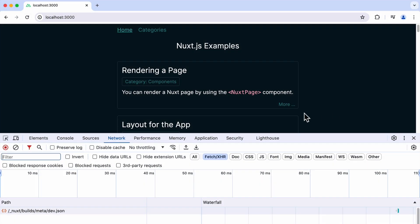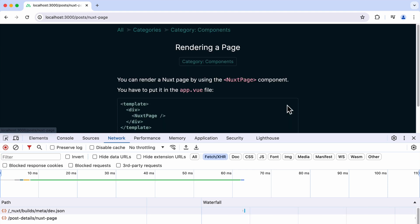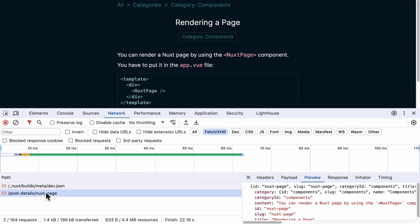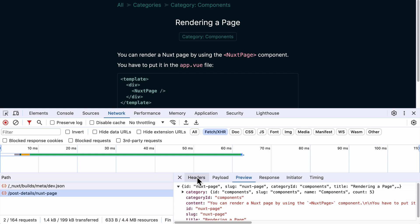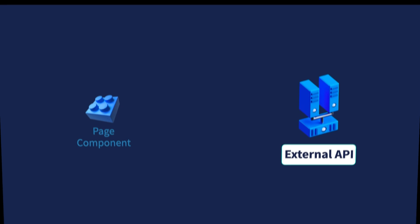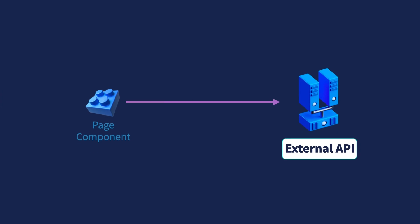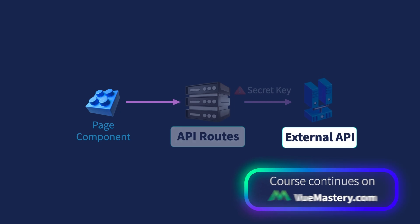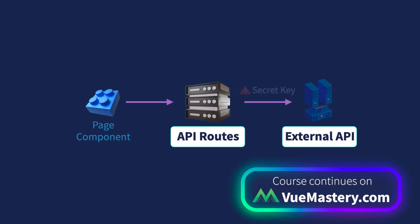When you fetch data from an API in a page component, the actual API URL will be exposed on the front end. Anyone would be able to see this using the browser dev tools. This means if you're fetching from an external API service that requires a secret key, that will be exposed as well. If we want to keep the information about any external API hidden, we have to add Nuxt API routes into our setup. We'll start doing that in the next lesson.